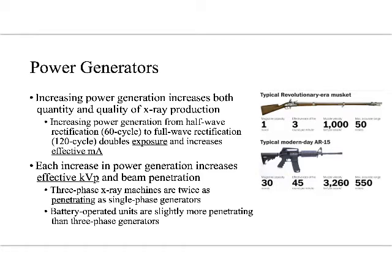Anytime we increase power generation, we're basically moving up from a revolutionary musket to contemporary weapons. Just like moving up in musket power increases firing rate and range, increasing generator power increases things like how quickly we can make x-rays. Both quantity and quality change when I move from a previous generator to a more contemporary high-frequency generator.